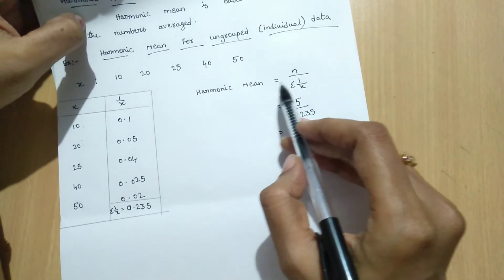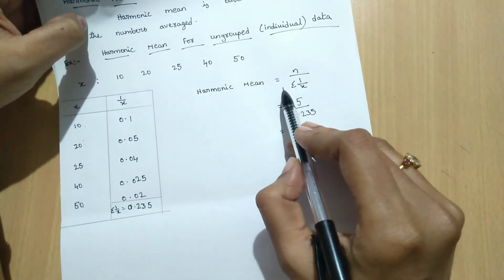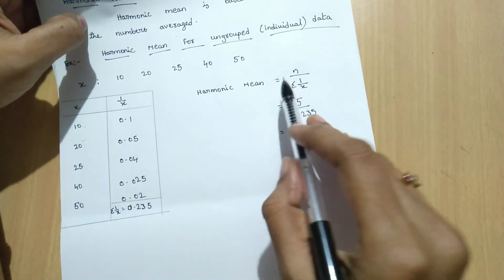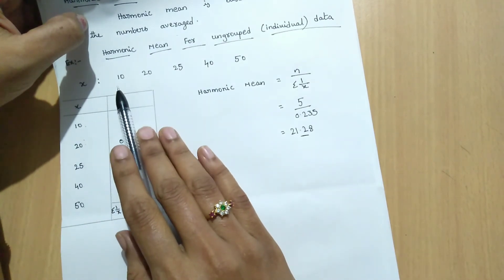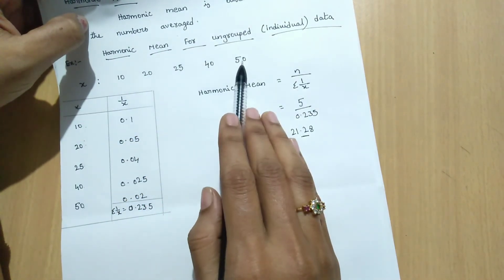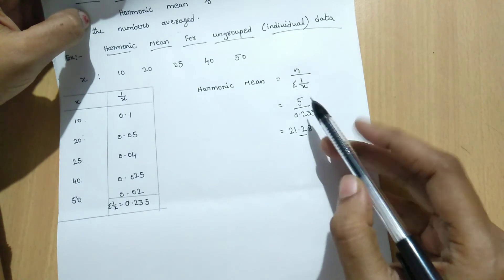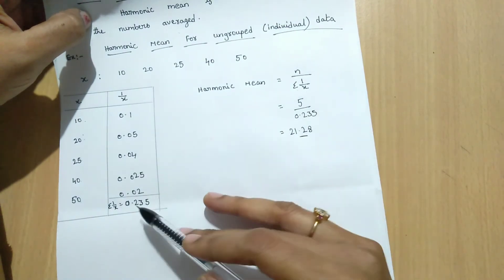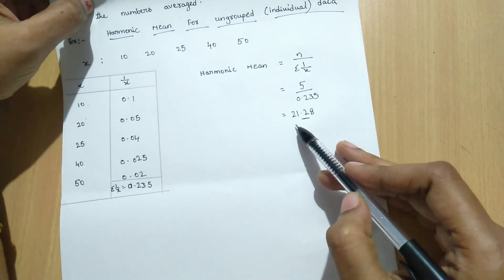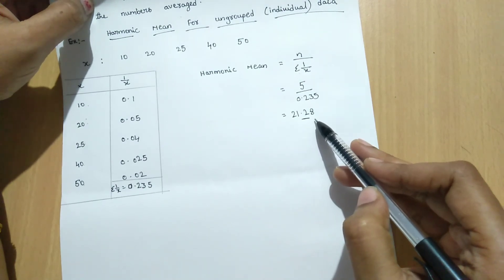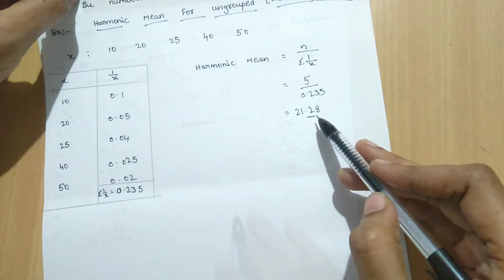What is our formula? Harmonic mean equal to n by summation 1 by x. Here n means number of observations. In this problem we have total 5 observations. Then 5 by summation 1 by x equal to 5 by 0.235. The calculated value is 21.28. This is the harmonic mean for individual data.